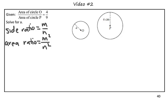So in this example, we are given the ratio of the areas is 4 to 9. We can use this to solve for the ratio of the corresponding parts, or the side ratio, since that's what we're looking for. We're looking to solve for A.